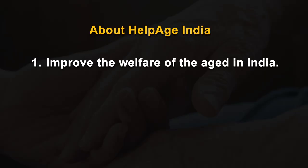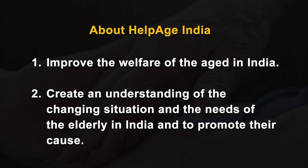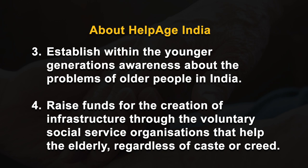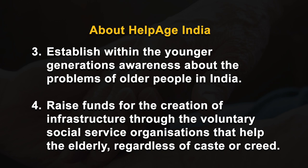In its newsletter and brochure on its website, www.helpage.india.com, HelpAge India has charted its goals and objectives to work for the cause and care of older persons with the ultimate aim of empowering them to make decisions pertaining to their own lives. It seeks to improve the welfare of the aged in India, create an understanding of the changing situations and the needs of the elderly, promote their cause, establish within the younger generations awareness about the problems of older people, and raise funds for the creation of infrastructure through voluntary social service organizations that help the elderly regardless of caste and creed.